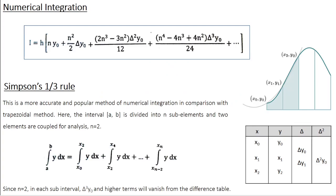In the last class, we were discussing about numerical integration. This is the general formula for numerical integration. We learned the trapezoidal method, where you divide the entire interval a, b into n subintervals and consider one subinterval at a time — n equal to 1. Within that subinterval, you approximate the curve using a straight line. You can never approximate a curve using a straight line perfectly, so there is some error associated with the trapezoidal method. This error can be reduced using Simpson's 1 by 3rd rule, which we are going to discuss today. It is an upgrade over the trapezoidal method.